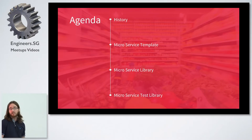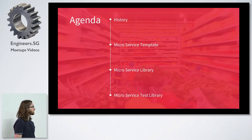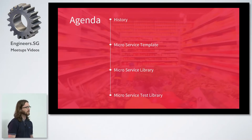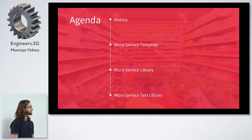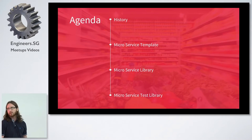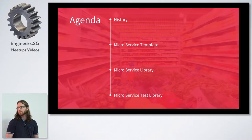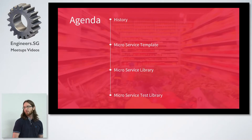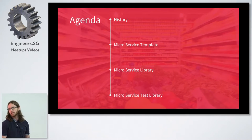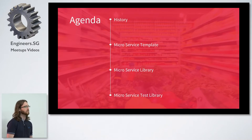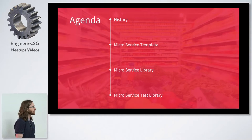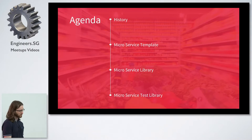Today's presentation is going to be split into four pieces. First, I'm going to give you a little bit of history about RedMart and why this became necessary, and also about the microservice template itself and how it's evolved. And then we're going to talk about the microservice templates and two critical pieces that it relies on — the microservice library and the microservice test library, which helps test things.